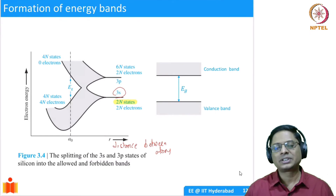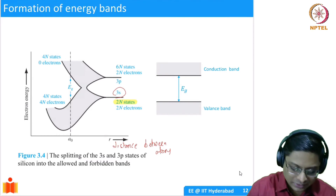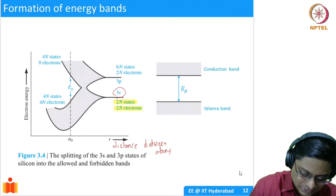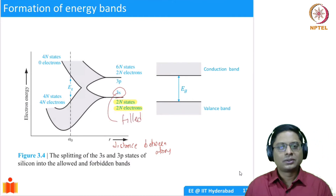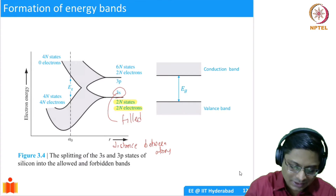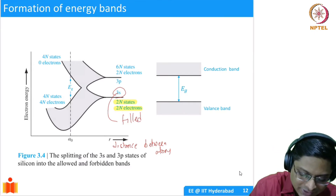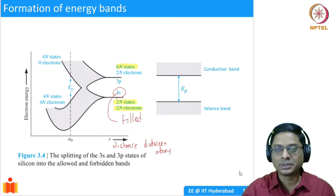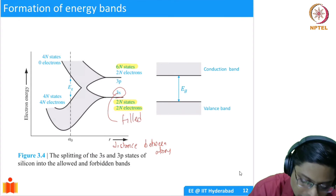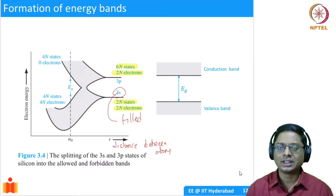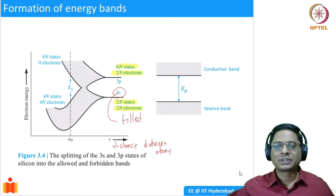The 3s has how many states available? Each atom has 2 states, so if you have n atoms you will have 2n states. We saw that the 3s state was fully filled, so you have 2n electrons in those states — it is completely filled. What happens to 3p? The 3p energy level is higher than 3s, and you have 6 states per atom — 3-fold degeneracy and each can take 2 electrons — so 6n states are available, but only 2n electrons are there. This is what happens when the atoms are far apart.